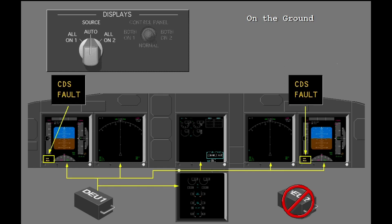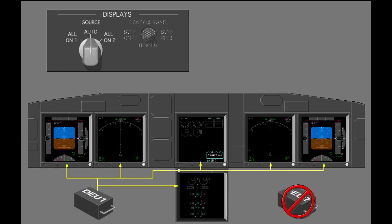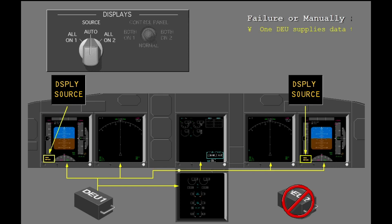If a DEU fails on the ground before engine start, CDS fault illuminates on the pilot's displays. This is a no dispatch condition. If the display system senses a serious DEU problem, the CDS maintenance indication illuminates on the ground, and dispatch is not permitted. The CDS maintenance enunciations extinguish when an engine is started. If a DEU fails in flight, display source illuminates, showing that the remaining DEU supplies data to all six DUs. All displays are available and operate normally.